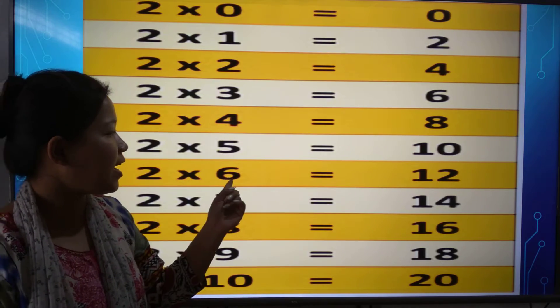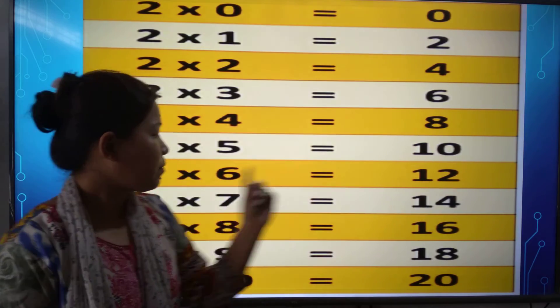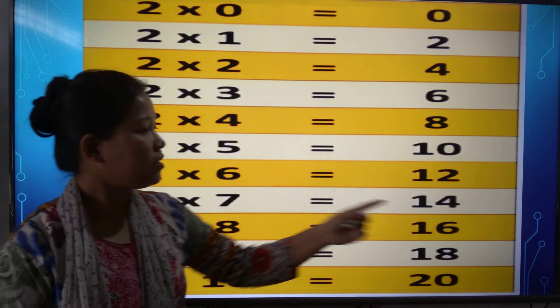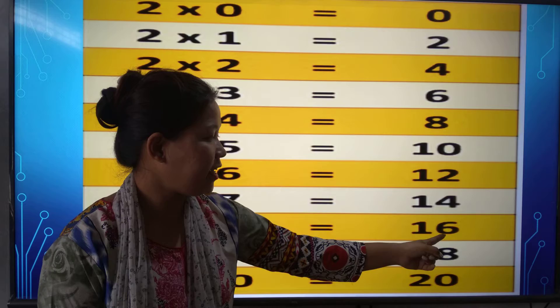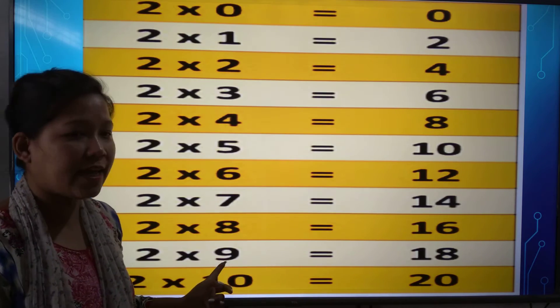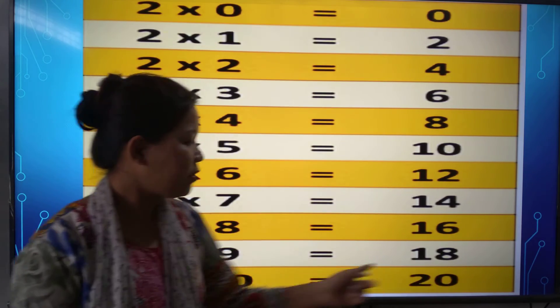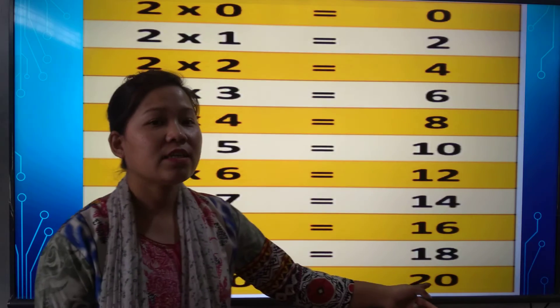2 6s are 12. 2 7s are 14. 2 8s are 16. 2 9s are 18. And 2 10s are 20.